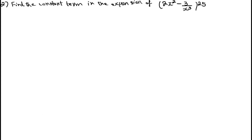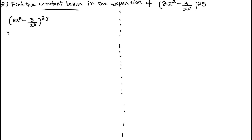Second question: find the constant term (constant term is the same as term independent of x) in the expansion of (2x² - 3/x³)²⁵. Write x = 2x², a = -3/x³ = -3 · x⁻³, and index n = 25.